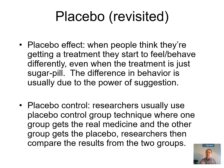So when people believe they are receiving a real effective treatment, they really do start to behave differently. Therefore, it's very important to have a placebo control group, where one group gets the real medicine — that's the experimental group — and the other group gets the placebo or bogus medicine, to rule out the effect of mental suggestion on the differences between the two groups.